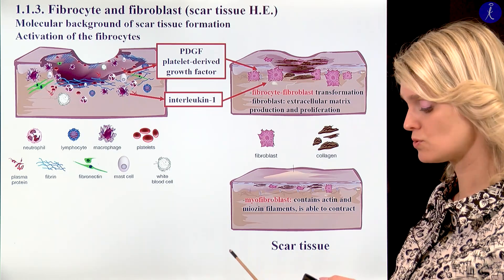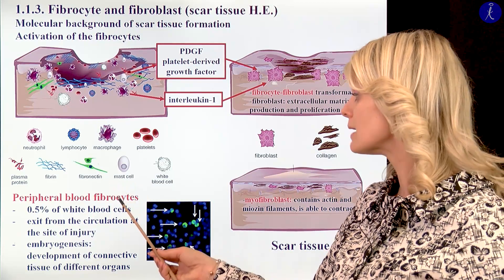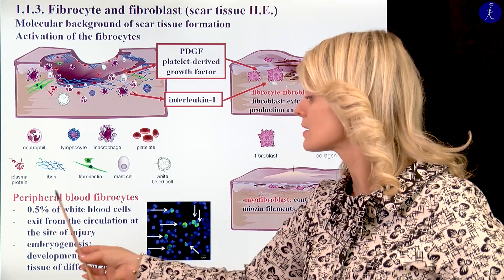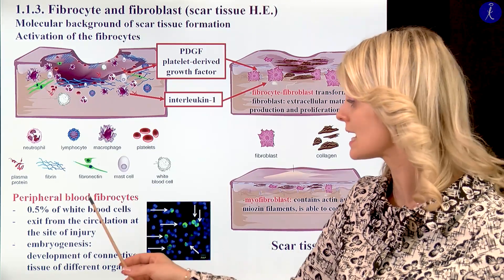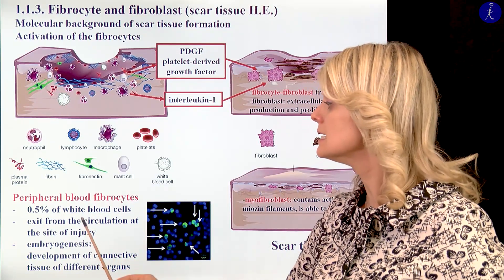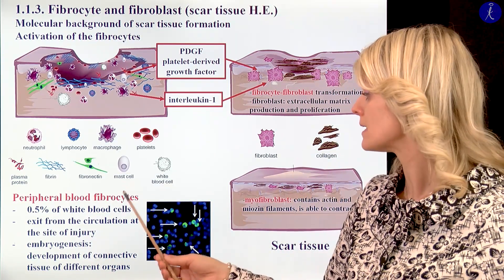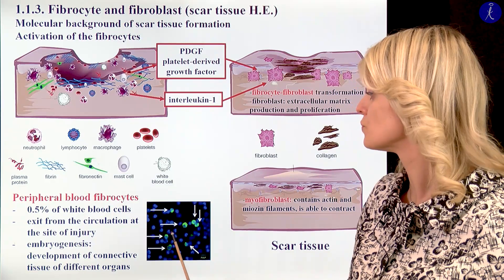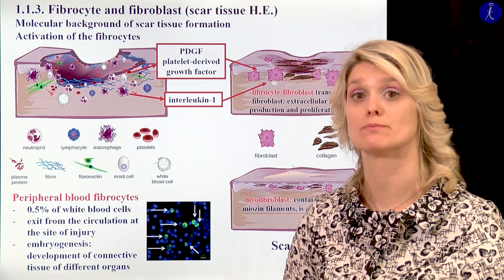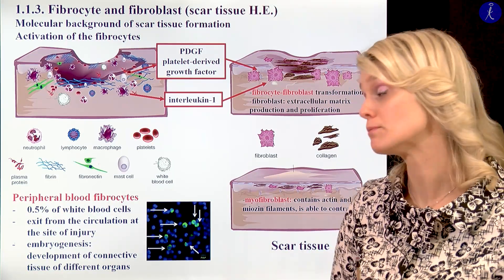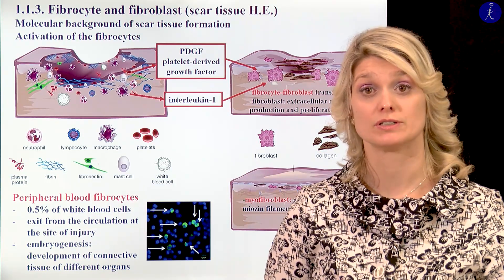It is also really important to mention that we can find peripheral blood fibrocytes, which will circulate with the blood — only just half a percent of the white blood cells. They are able to go through the vessels and go to that connective tissue where they are needed. And during embryogenesis, they have a really important function in the development of the connective tissue of different organs.